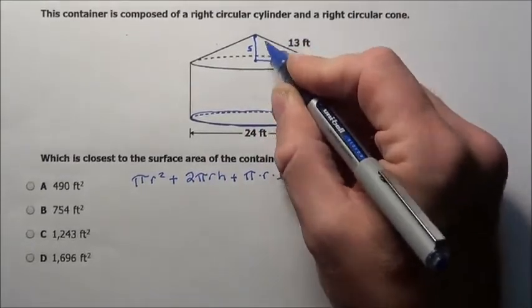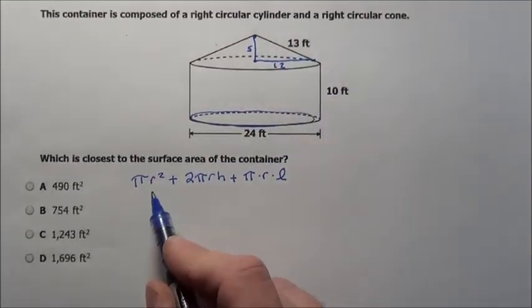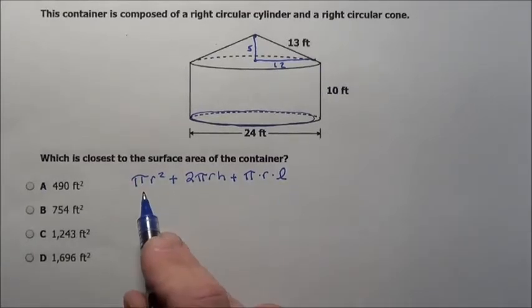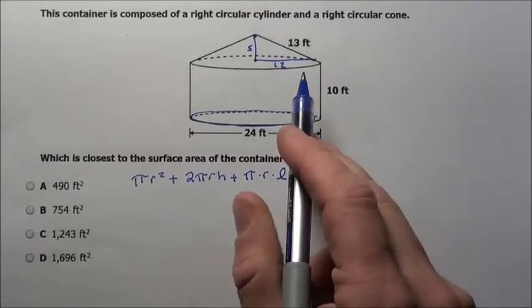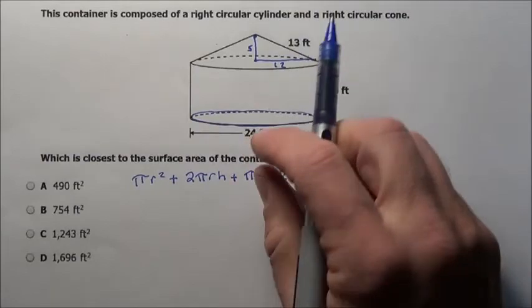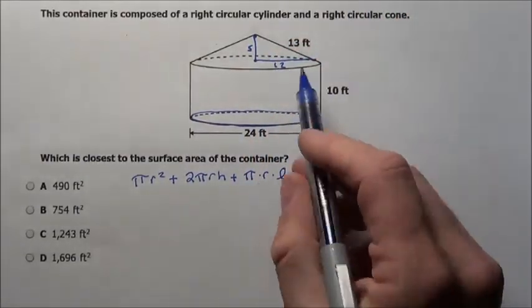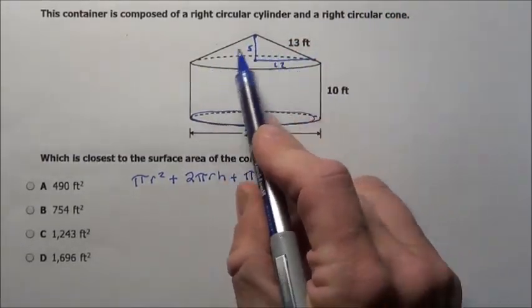That's how we're going to get the lateral area, so we're going to use that 13. So we're just going to put all this together and that should be it. This is the circle on the bottom, this is the lateral area of the cylinder right through here, and this is the lateral area of the cone.